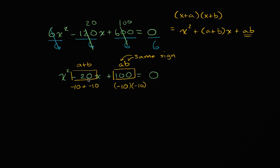And so we can rewrite the left side of this equation as, we can rewrite it as x, and I'll write it this way at first, x + (-10) times x + (-10) again. And that is going to be equal to 0. So all I've done is I've factored this quadratic.